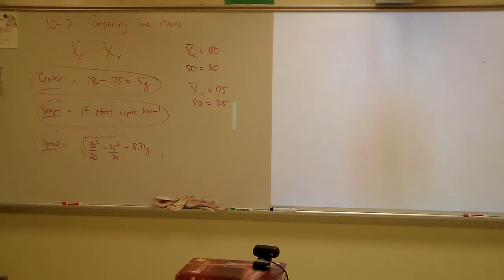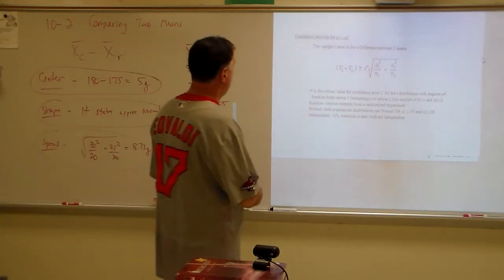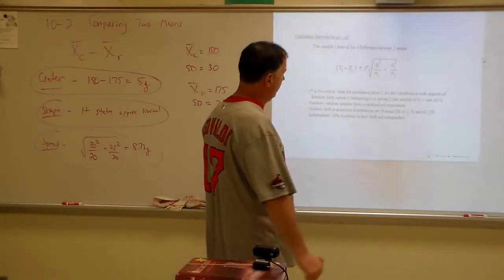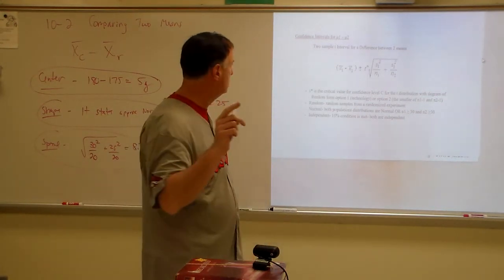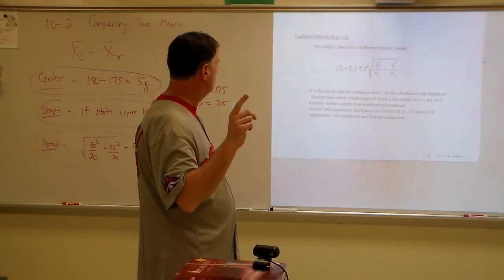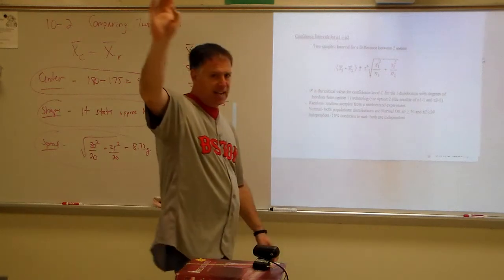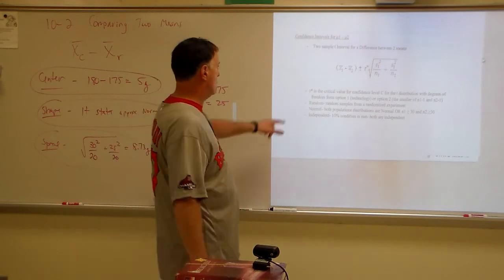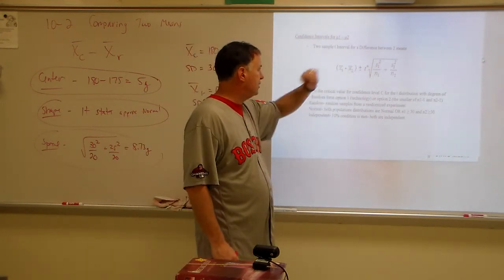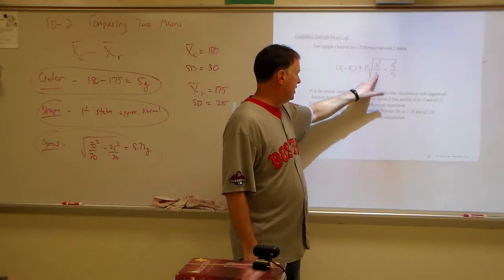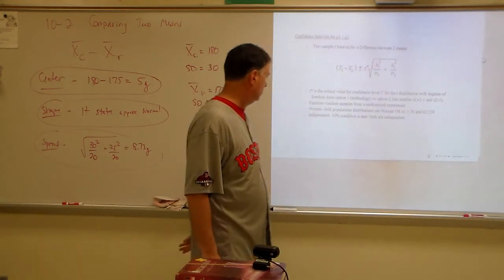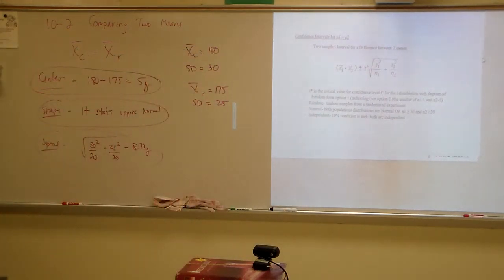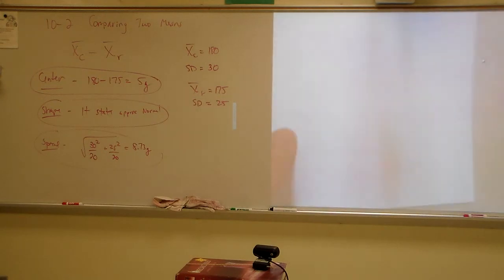So center, they want Camberley minus Ryderwood. That's going to be 180 minus 175, so that's going to be 5, and that's in grams. Shape, they tell us that it was approximately normal, it states approximately normal. And then we get to spread, and we get to take the square root of 30 squared and then 25 squared. Let's look at the sample for the Camberley. It's 20 potatoes from each sample. So we're going to put these over 20. I'm going to see what that says in the book for an answer. 8.73 grams. Describe the shape, center, and spread. We did that. Center, 5 grams. Shape, approximately normal. Spread, standard deviation, 8.73 grams.